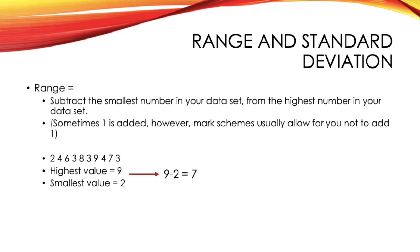And then also, sometimes 1 is added. However, mark schemes usually allow for you to not add 1, and I personally never did add 1. So, once again, we'll take our same data set, and the highest value here is 9, and the smallest value is 2. And if you do 9 take 2, you just get a range of 7.